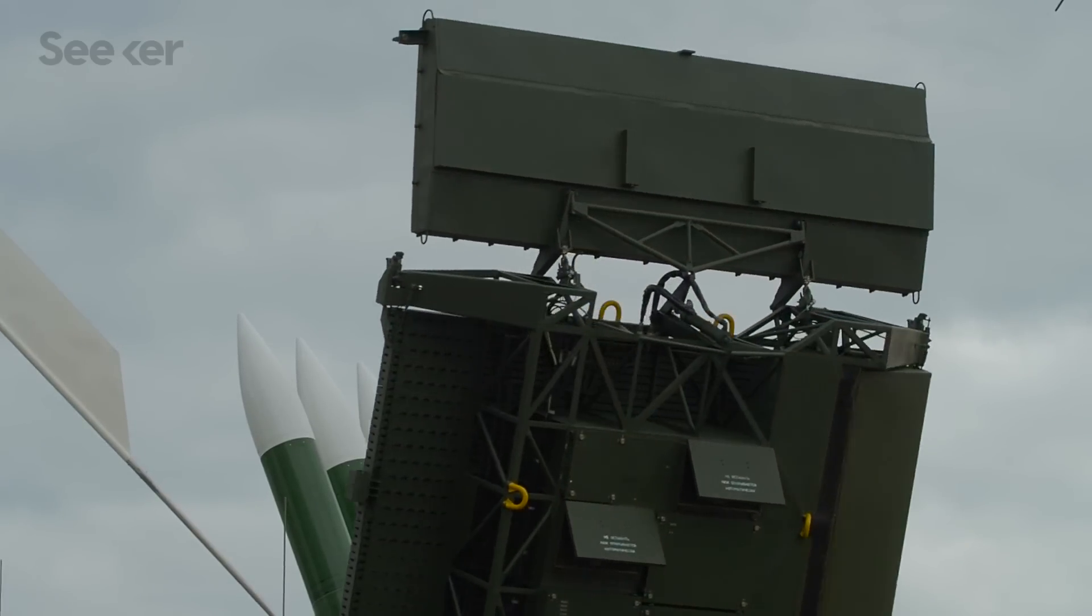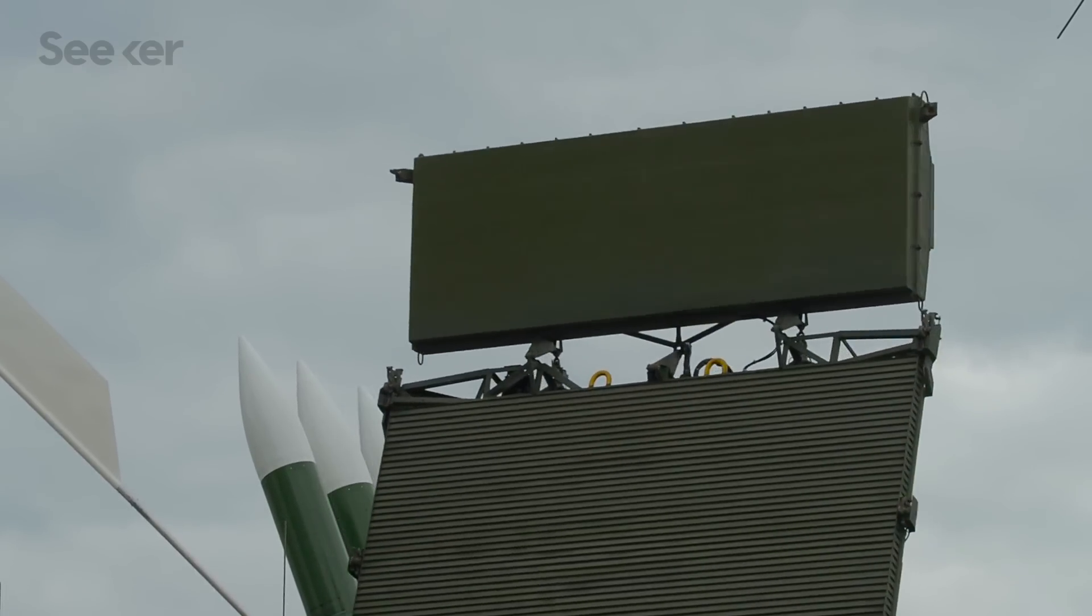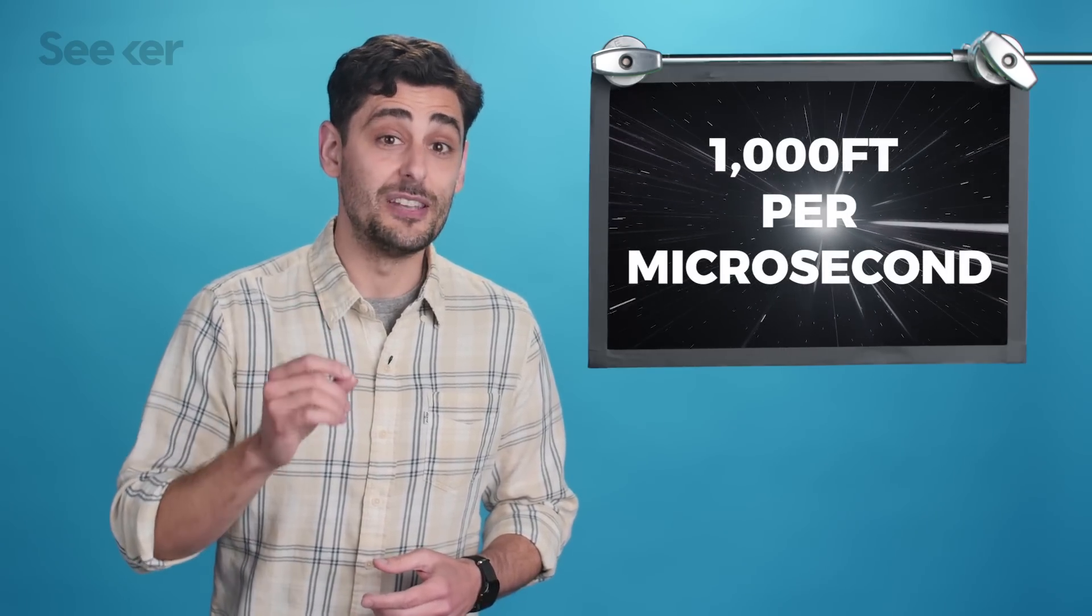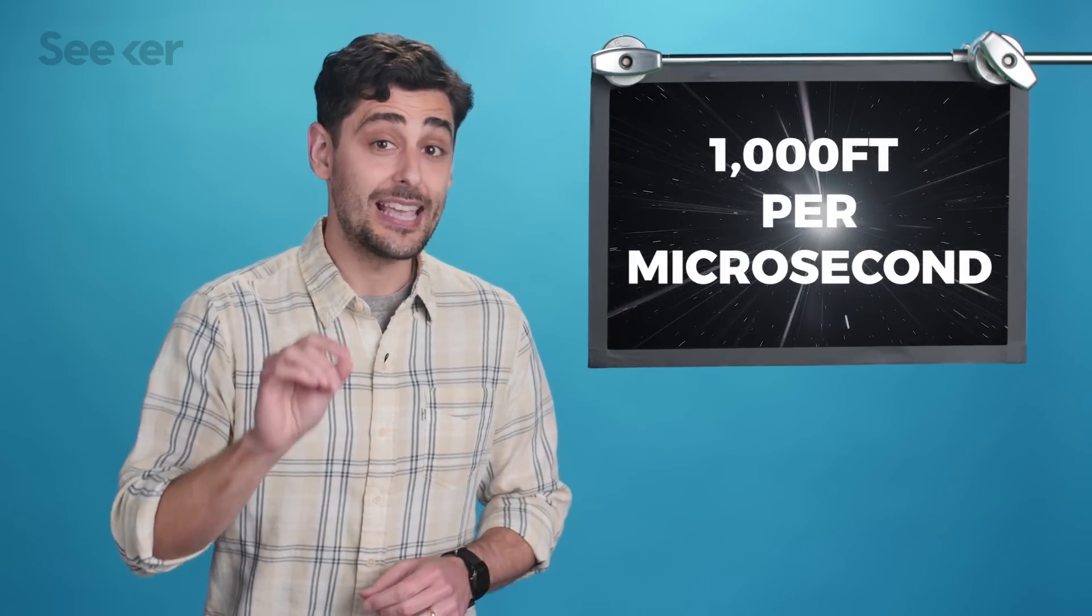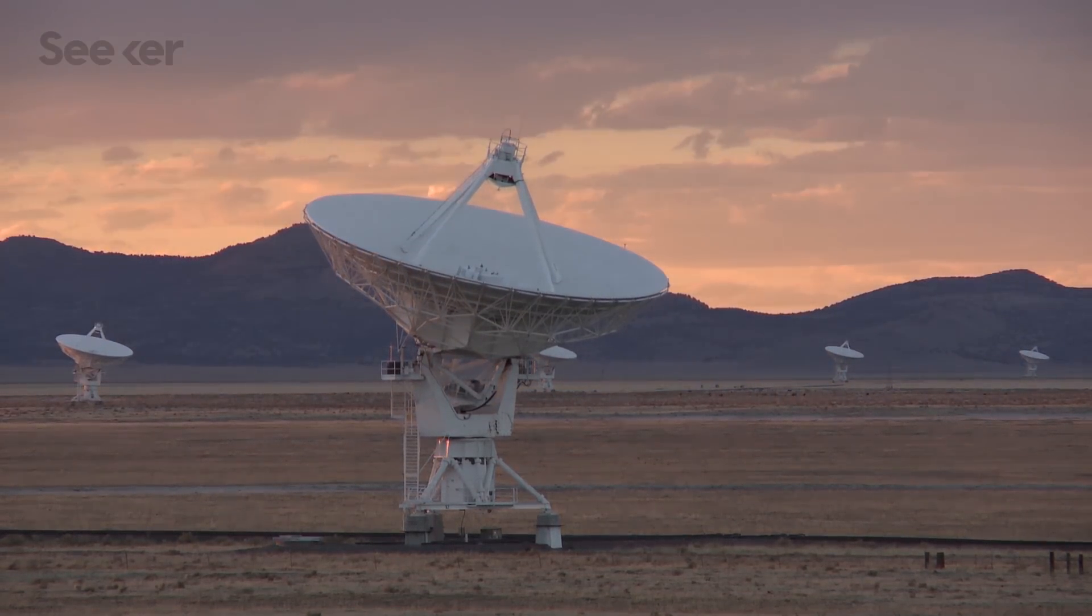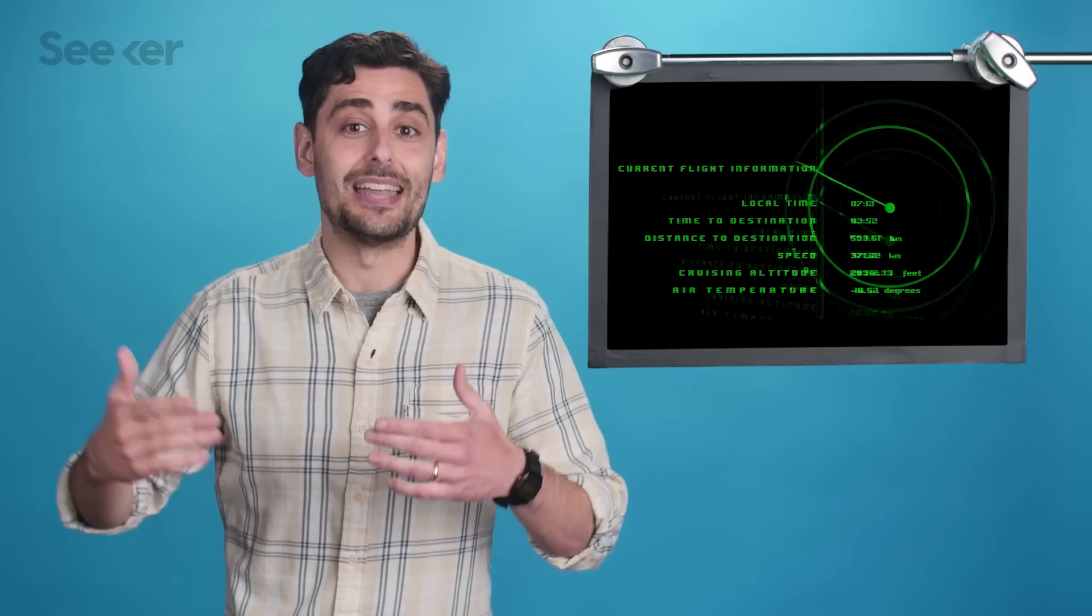But first, you should understand how radars actually do their detecting. A directional antenna from the radar sends out a beam of radio waves, and the radar waits to see how the waves are reflected back. Based on how much energy comes back to the antenna, the radar can tell how big the object is. And based on how long it takes for the waves to return, the radar can tell how far away that object is. A radar wave moves at about a staggering 1,000 feet per microsecond, which is the same speed as light.